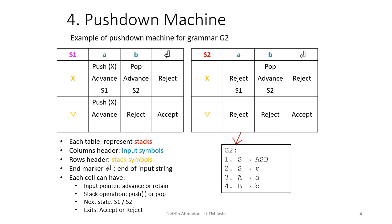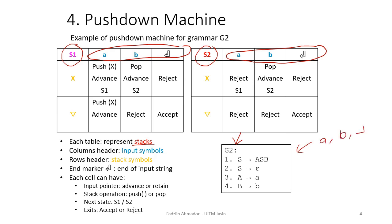This pushdown machine has two states: state 1 and state 2. Each table represents a state. The column headers are the input symbols — the available input for grammar 2 is A, B, or an end marker. The row headers are the stack symbols, which are symbols that can be inserted inside our stack. The end marker signifies the end of the input string.